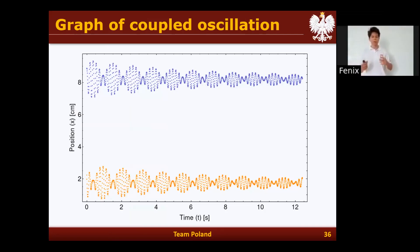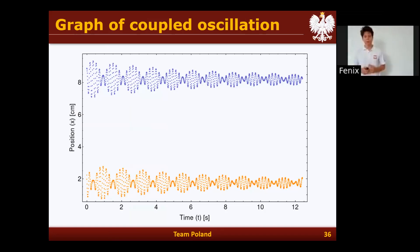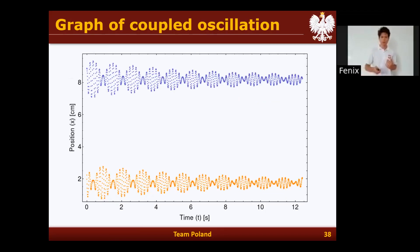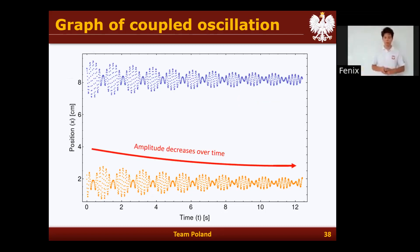We can see a beating pattern, which suggests there might be two frequencies. Indeed, when we take the Fourier transform of the motion, we can see that there are two frequencies, and we can predict them perfectly. Looking more closely, we can also see another important parameter, which is the amplitude. The amplitude is decreasing, showing dissipation in the system.